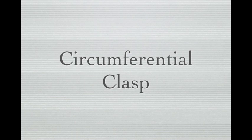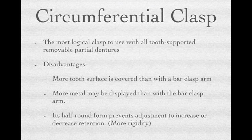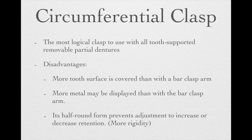Now let's look at the circumferential clasp. The circumferential clasp is the most logical clasp for tooth-supported removable partial dentures. The I-bar and bar type can be used for both tooth-borne and distal extension RPDs. However, compared to the bar type, the circumferential clasp has some disadvantages: it covers more tooth surface and displays more metal due to its half-rounded form. It is more rigid, which also prevents adjustments to decrease or increase retention.